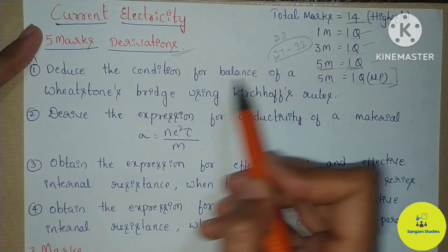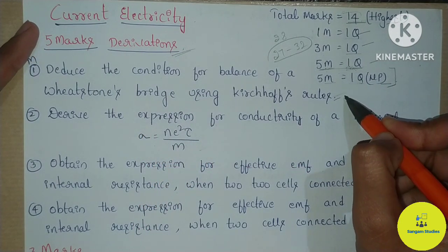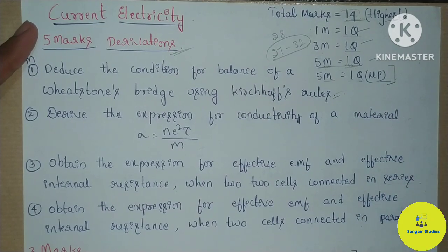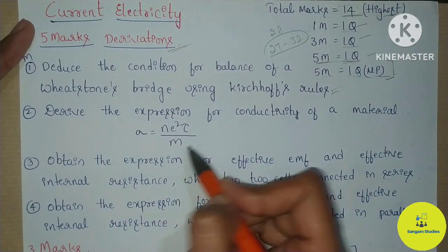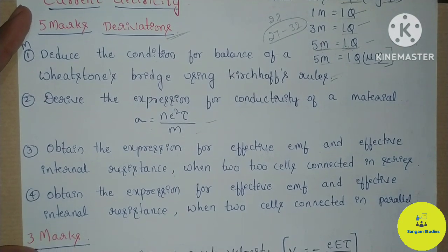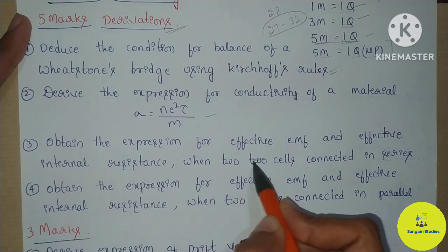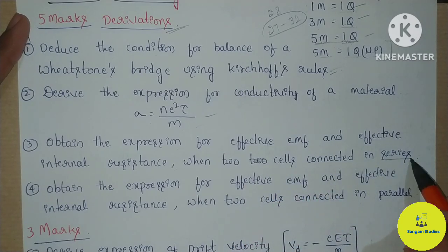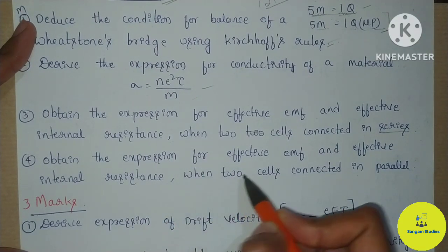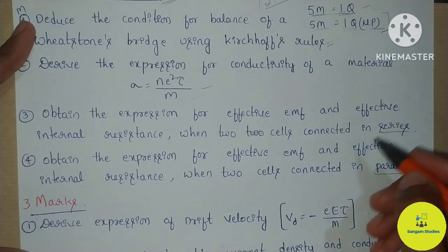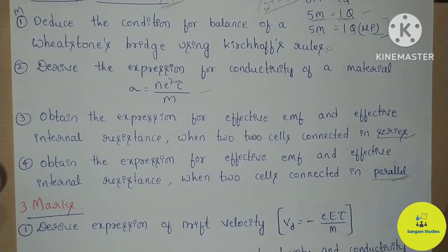The four important 5-mark derivations are: First, deduce the condition for balance of Wheatstone's bridge using Kirchhoff's rule — this is a model question paper E5 mark derivation. Second, derive the expression for conductivity of a material: sigma equals Ne²τ/m. Third, obtain the expression for effective EMF and effective internal resistance when two cells are connected in series. Fourth, obtain the expression for effective EMF and effective internal resistance when two cells are connected in parallel. These four derivations are 100% important.